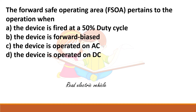The forward safe operating area pertains to operation when the device is forward biased. Safe operating area is the region in which you should operate the device, and specifying 'forward' means the device is under forward bias conditions.